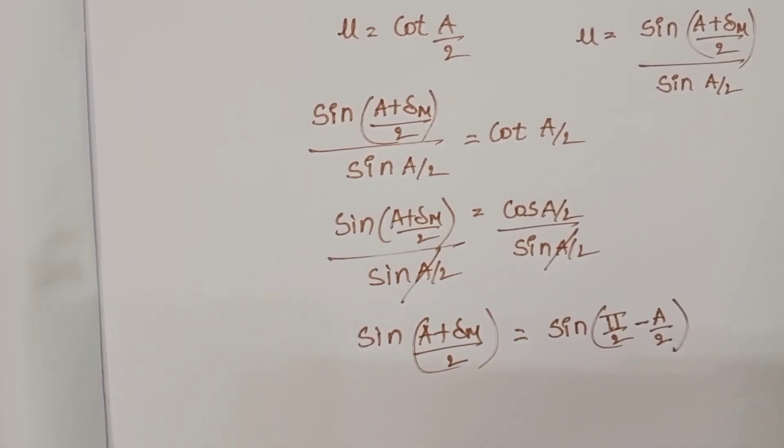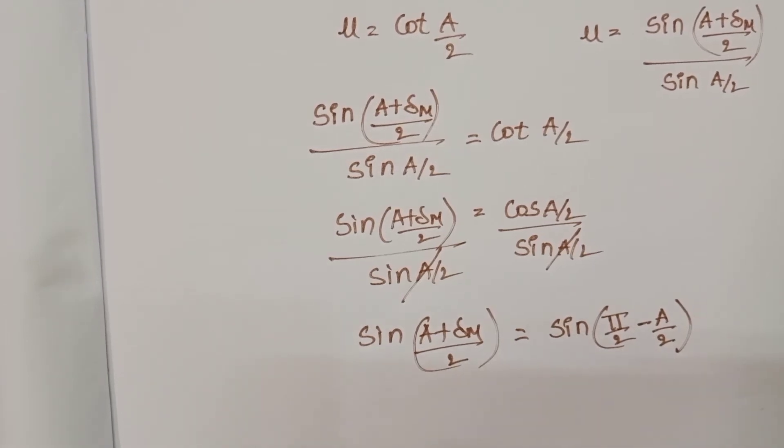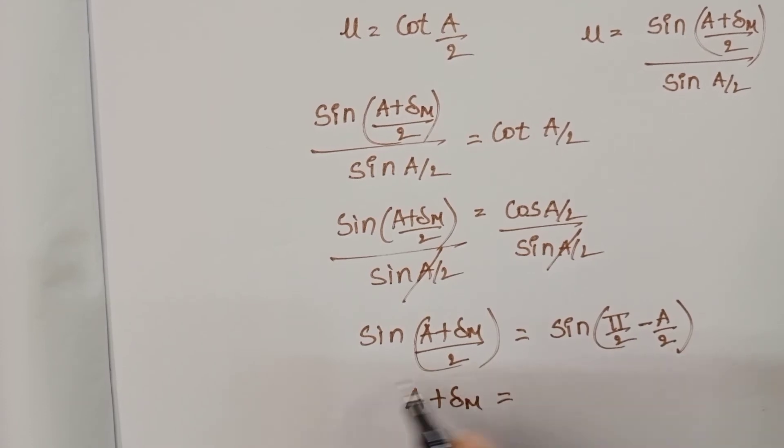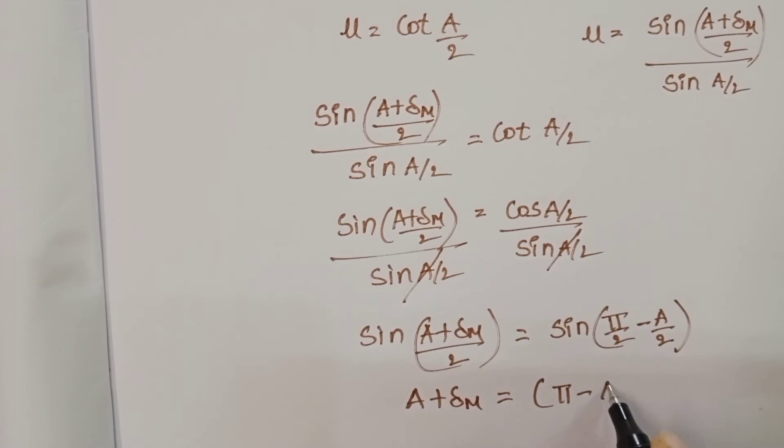A + δm equals π - A, since the denominator 2 cancels. Moving +A to the right-hand side.